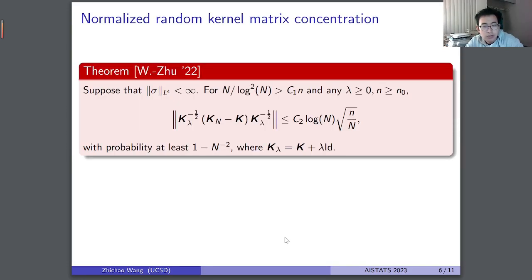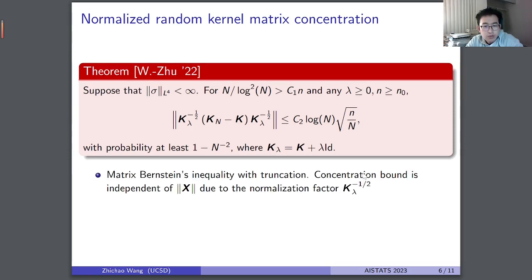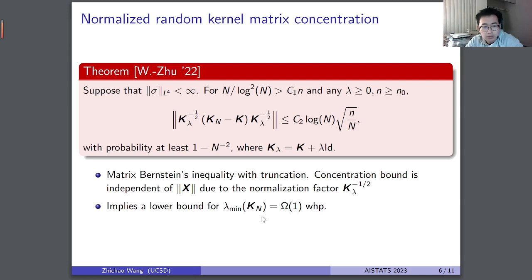The main method to prove our theorems is a normalized random kernel matrix concentration result. For very general sigma, when N is much larger than n, the normalized concentration between K_N and K has rate sqrt(n/N). Importantly, this bound is independent of the norm of the data X due to the normalization, which yields sharp concentration results for training and test errors. This also implies that the smallest eigenvalue of K_N has a non-trivial lower bound with high probability.